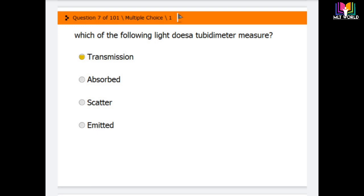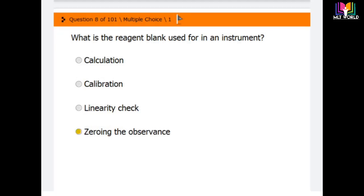Question number eight: What is the reagent blank used for in an instrument? Options are calculation, calibration, linearity check, and zeroing the absorbance. The correct answer is zeroing the absorbance. The reagent blank is used for instrument zeroing the absorbance.